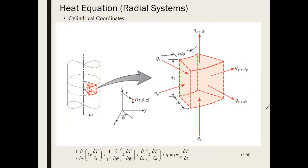When dealing with radial systems, the heat equation takes on a different form because as heat propagates outward radially, it encounters a different cross-sectional area. You have to account for that in the differential control volume balance, which gives rise to the terms 1/r and 1/r², also due to the description of Fourier's law for conduction in a radial system.